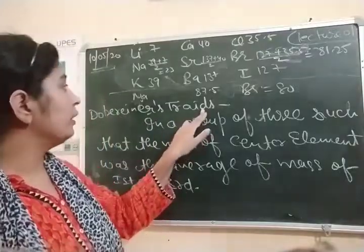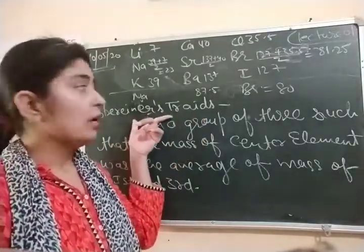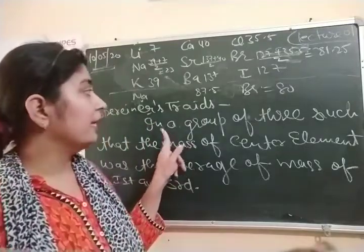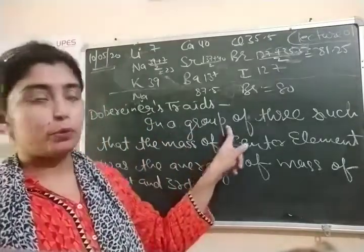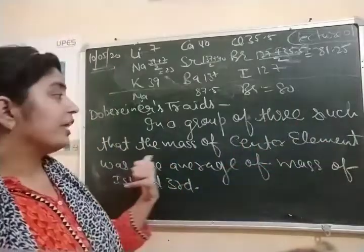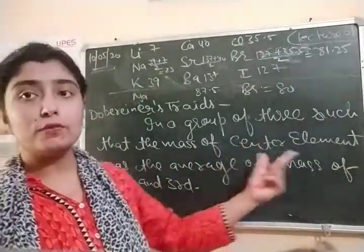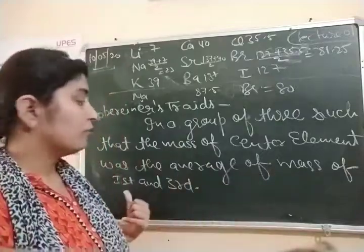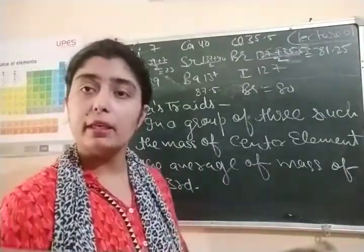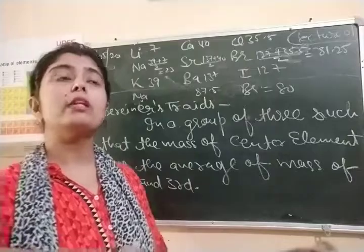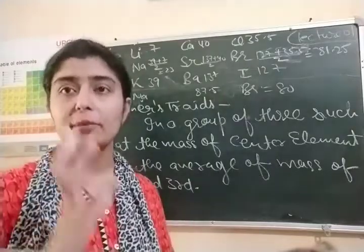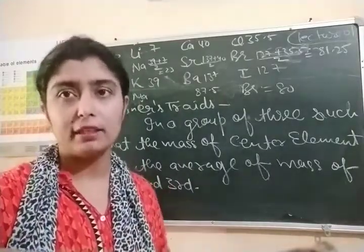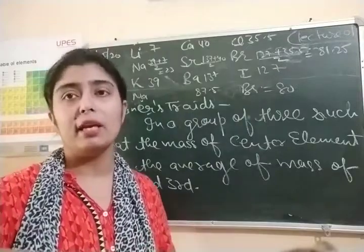The concept of Dobereiner, which is called Dobereiner's Triad. According to him, he arranged the elements in such a way that the elements are in a group of three, such that the mass of the center element was the average mass of the first and third elements. So what did he do? He made groups of three. However many elements were discovered at that time, he made groups of three from them.